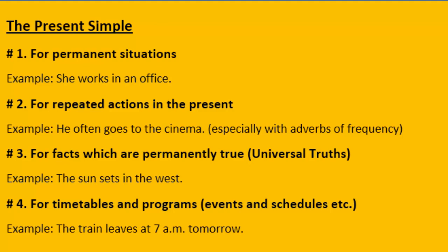For example: 'She works in an office.' It means that she worked in that office yesterday, she is working in that office today, and she will probably work in that office tomorrow too. The second use of present simple is for repeated actions in the present.